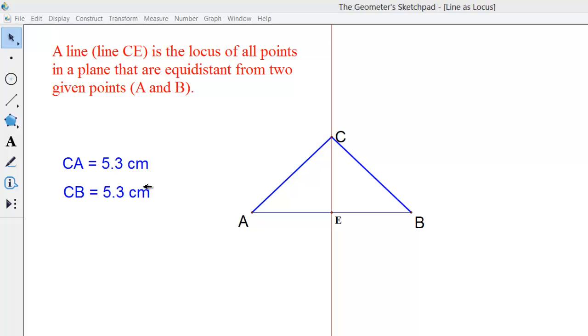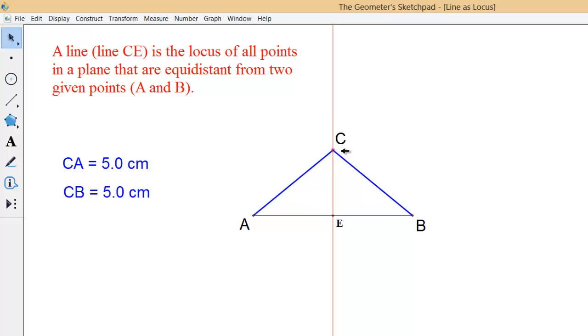Point C is the same distance from point A as it is from point B. Now if I move point C, you can see the two measurements CA and CB are always equal.